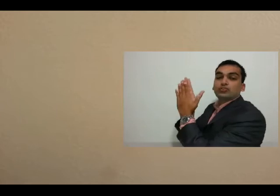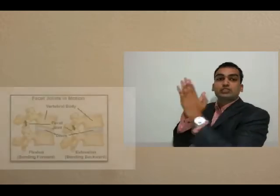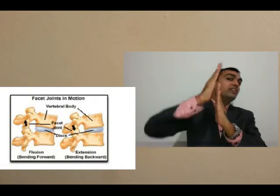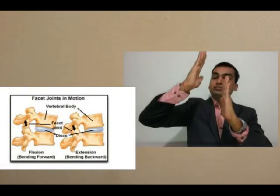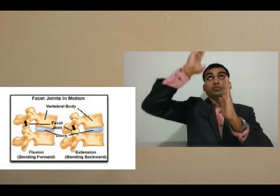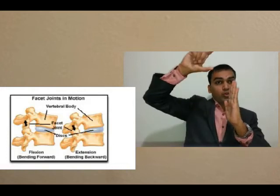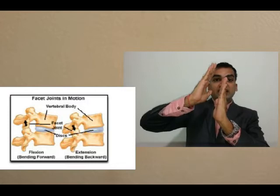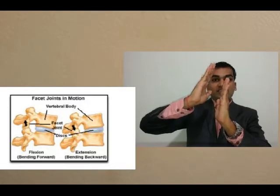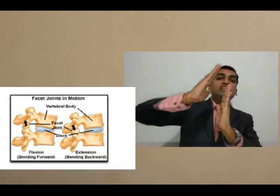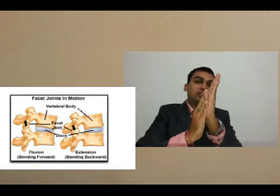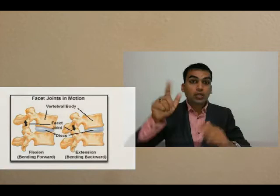Now let's talk about the biomechanics of the lumbar facet joint. The orientation of the right-side facet joint — the inferior process of the superior vertebra and the superior process of the inferior vertebra — when you do lumbar flexion, the facet joints open up at the back. When you do extension, they close down, and this happens bilaterally.